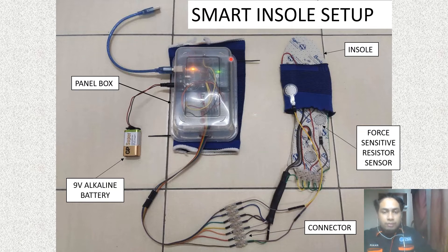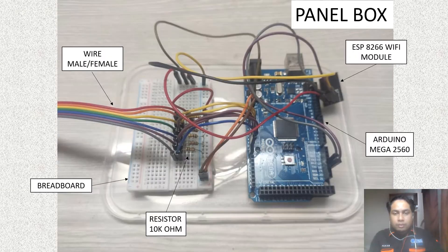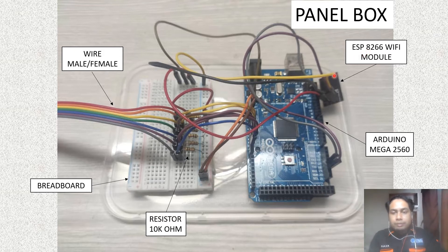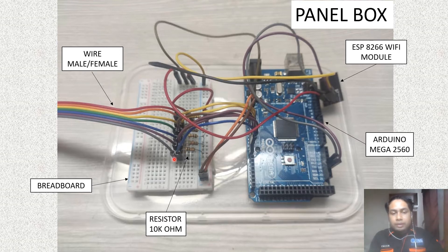This is my panel box. The components inside include: first, the microcontroller, which is the Arduino Mega 2560. Second, I have an ESP8266 Wi-Fi module, which connects to Wi-Fi to transmit data from the hardware to my Blynk interface. Third, I am using a 10K ohm resistor, and also a breadboard with male and female wires.